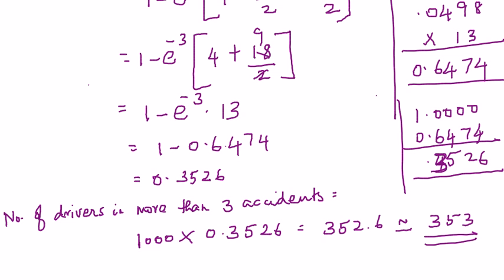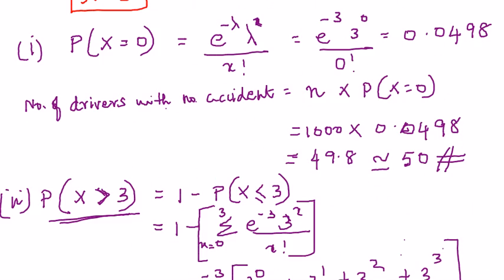So, out of 1000 drivers, you are going to have 353 drivers who are going to be involved with more than 3 accidents in a year, right. That's all. You have also found the second part.